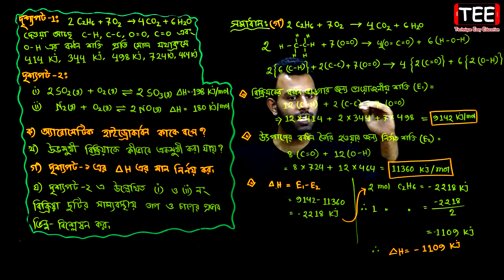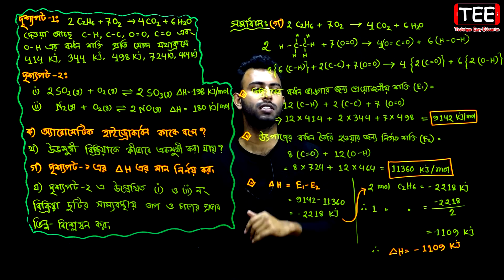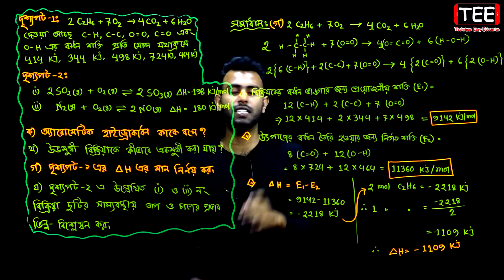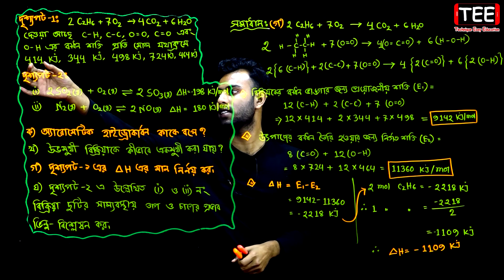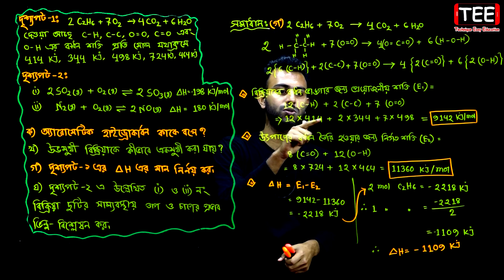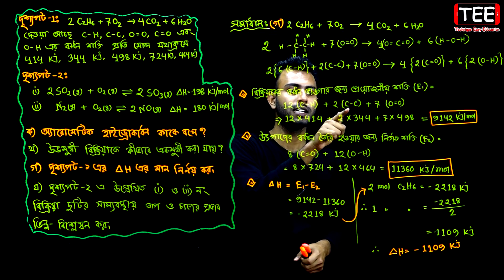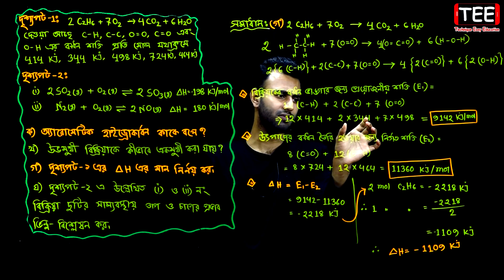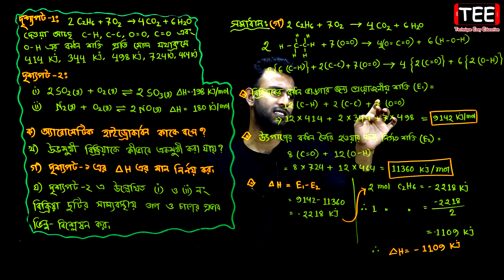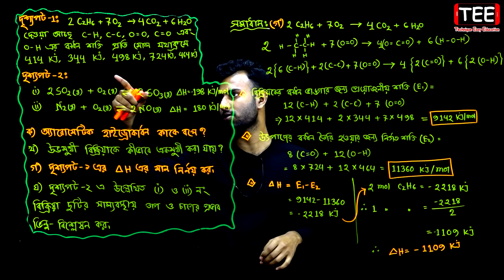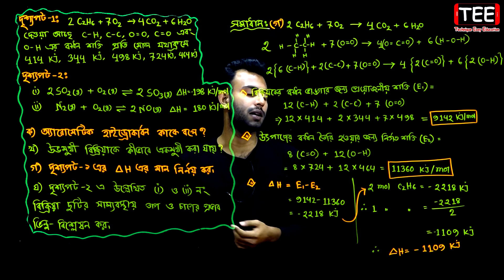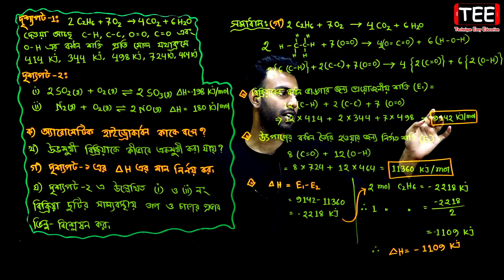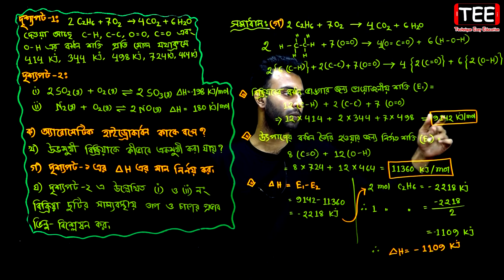First, we have the value of each bond type. So 12 CH bonds means 12 × 414 plus additional bond contributions. The total value calculated is 1912 kJ/mol.